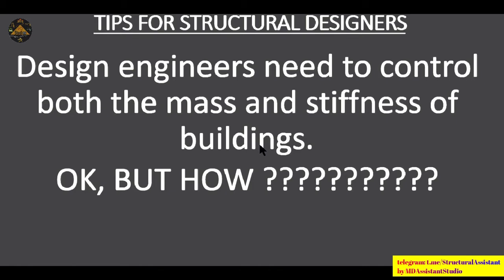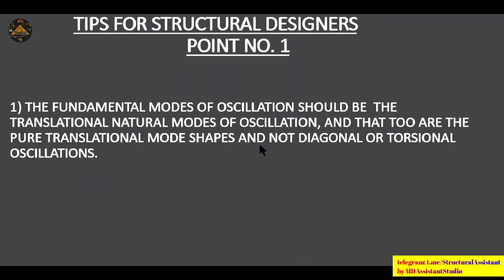The design engineer needs to control both the mass and stiffness of the building. The fundamental natural mode of oscillation should be a translational mode — pure translational oscillation — and torsional oscillation should always be avoided. After designing a structure, I always check that the first mode is translational; if not, I either increase the stiffness, increase the size, or rearrange the structural layout so that the first mode is translational.